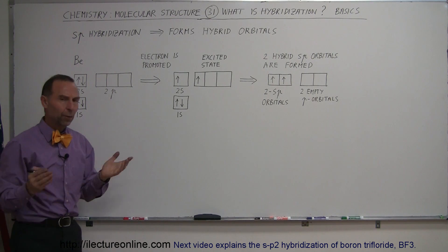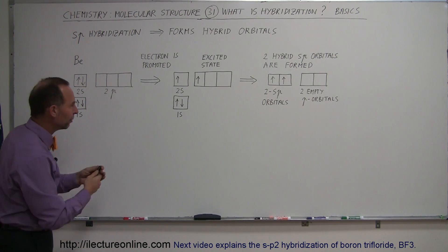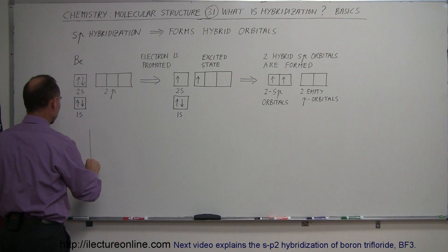So what happens now? What does that mean? What does an sp orbital look like and how does it form? Well, for example, take an s orbital that looks like a spherical in shape.